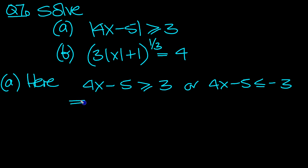So here, this one is 4x is greater than or equal to, move the 5 over is 8, because it becomes plus 5, and then move the 4 from times down to divide. So x is greater than or equal to 2.